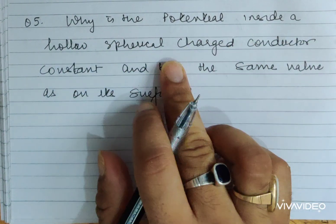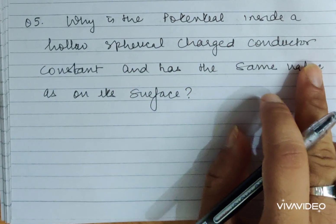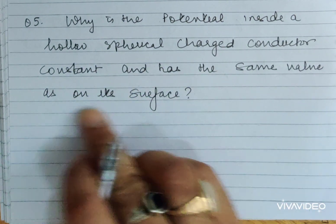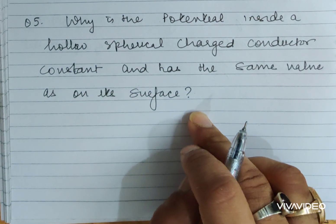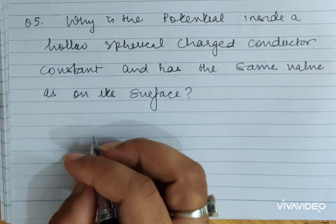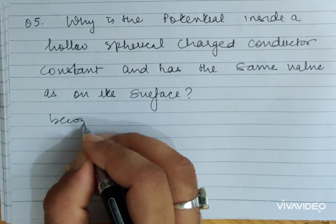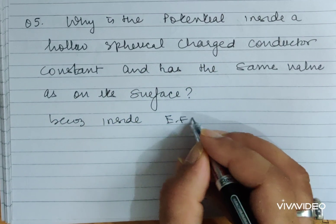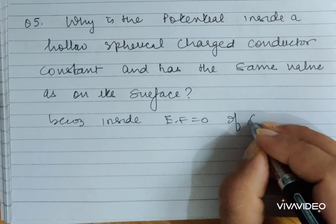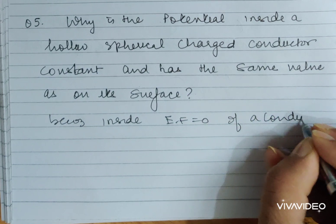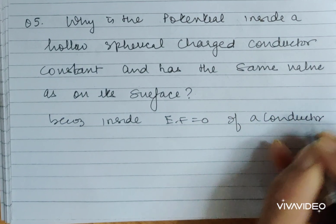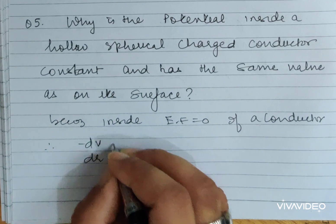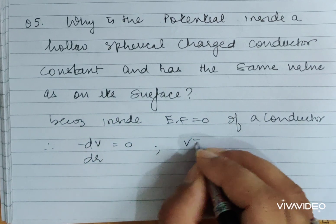Why is the potential inside a hollow spherical conductor constant and has the same value as on its surface? The reason is that inside a conductor the electric field is zero, therefore dV/dr equals zero.